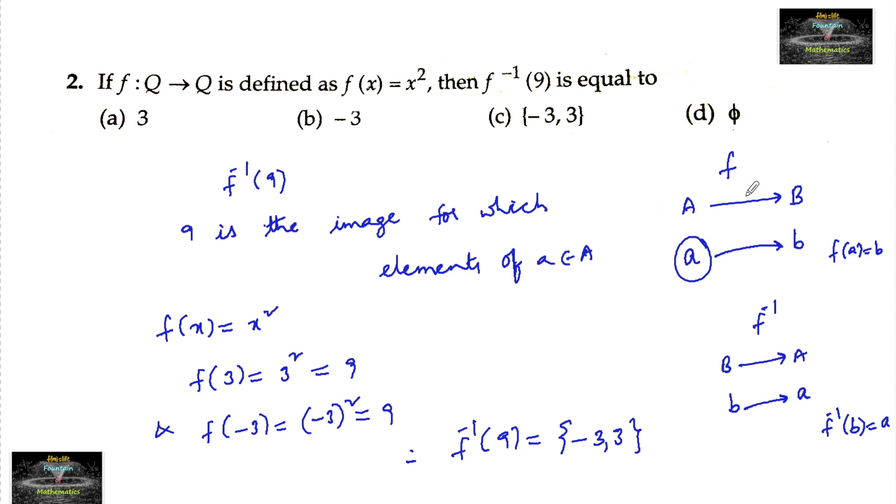We can't say this relation to be a function because of its domain and codomain. The negative rational numbers don't have the square root in rational number systems. So it's only considered to be a relation, not as a function.